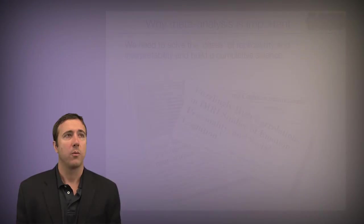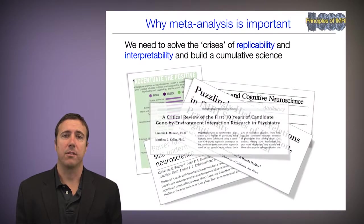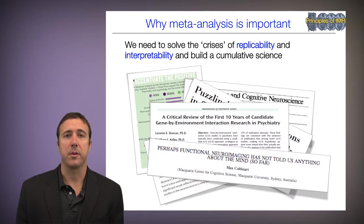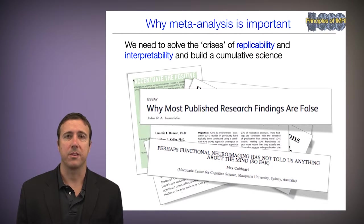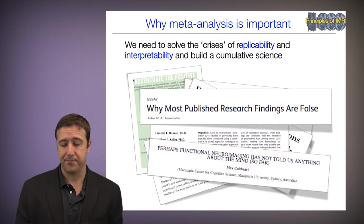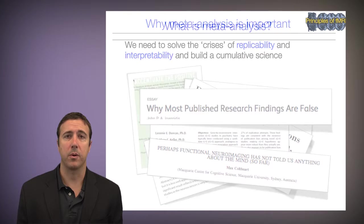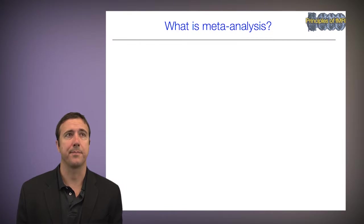Welcome back. In this module we're going to talk about meta-analysis, some of its uses and how to do it. So why is meta-analysis important? We need to solve the crises of replicability and interpretability in order to build a cumulative science, and meta-analysis is one of the principal ways of doing that.